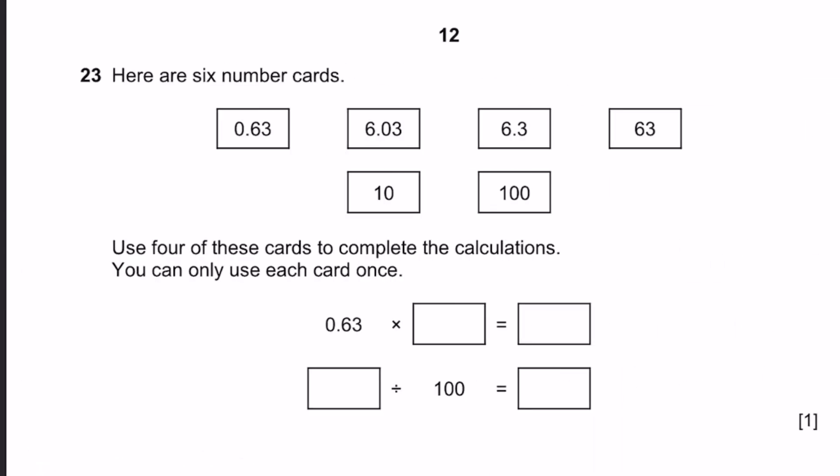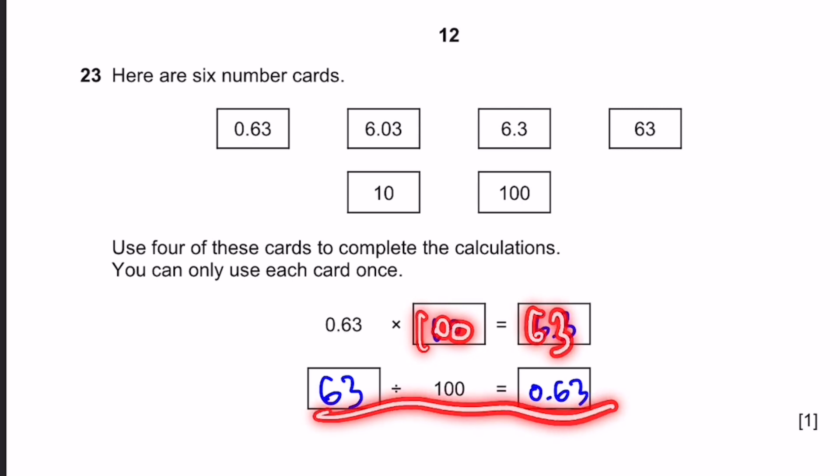Question 23. Here are 6 number cards. Use 4 of them to complete the calculations. You can only use each one once. 0.63 times 10 equals 6.3. And for the second one, 63 divided by 100 equals 0.63. We can't put 163 here because there won't be anything possible for the second statement. So this is the only answer.